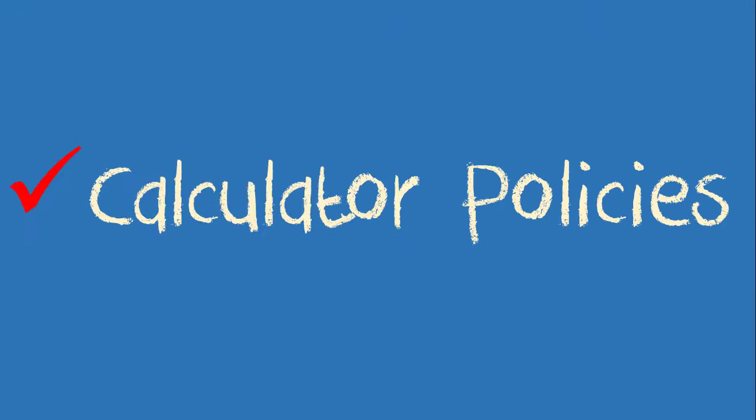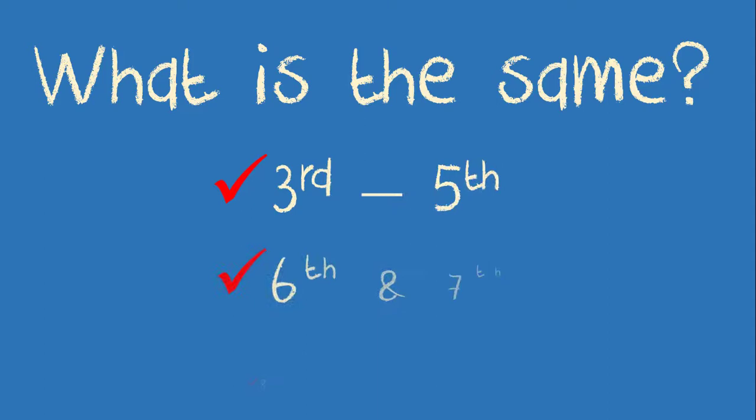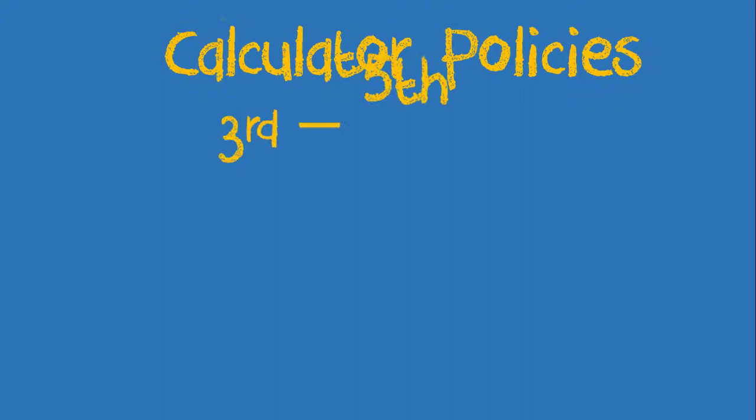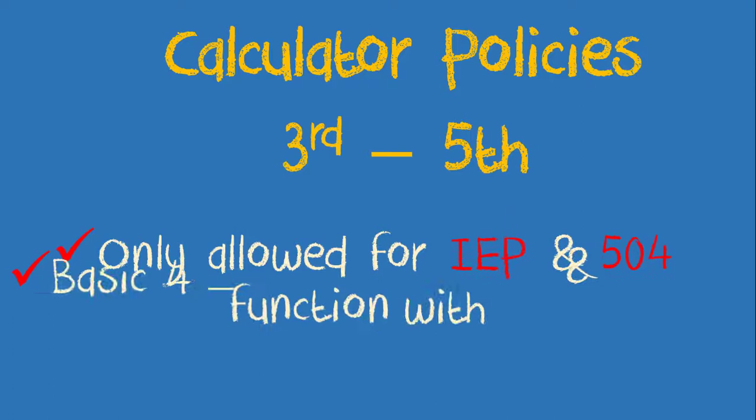Next let's look at calculator policies. Everything will remain the same on the state of Oklahoma state testing calculator policy for third through fifth, sixth and seventh, and eighth grades. There were only a few changes to the high school policy which we will go over in just a moment. To review, remember the third through fifth grades can only have a calculator on the state test if it is listed as an accommodation on their IEP or 504. These calculators need to be a basic four function calculator but can have a square root and percent buttons, but not a plus or minus button.